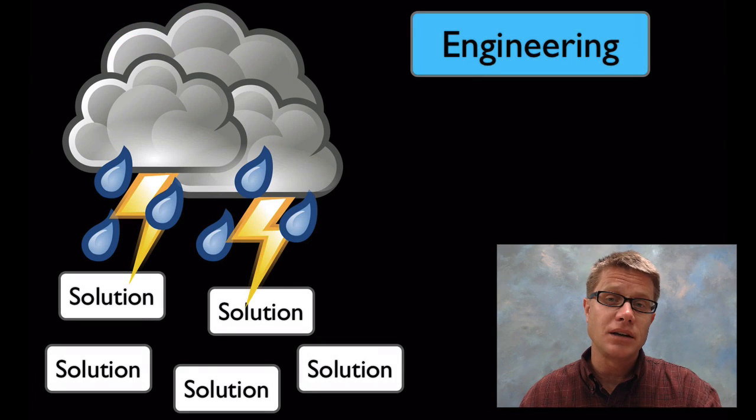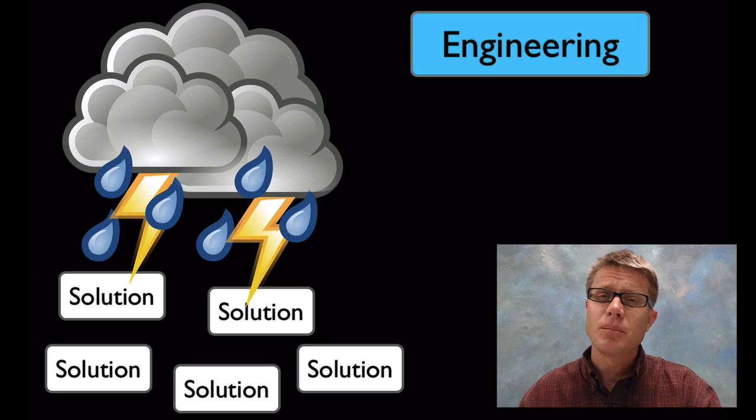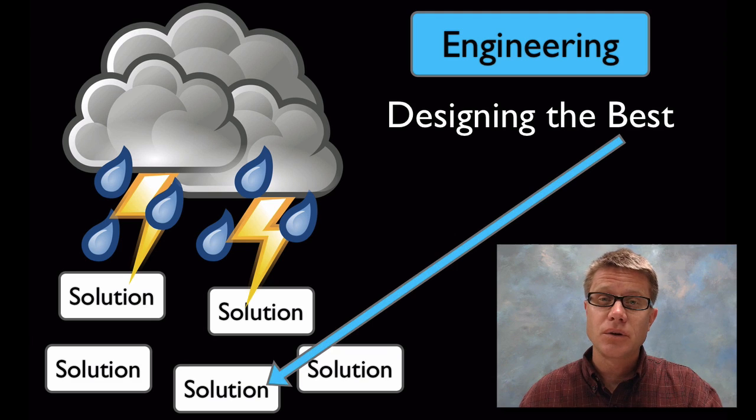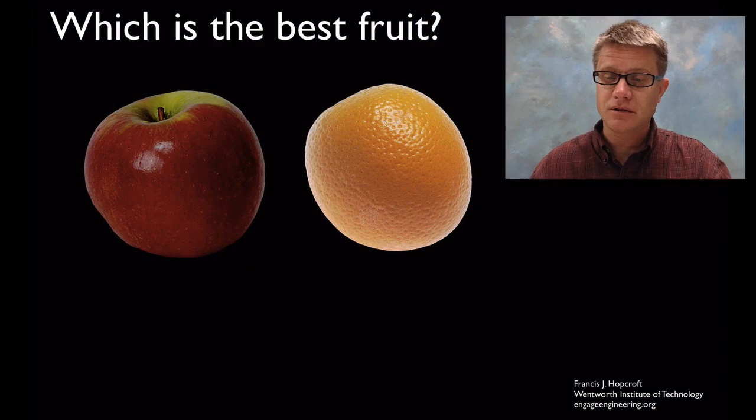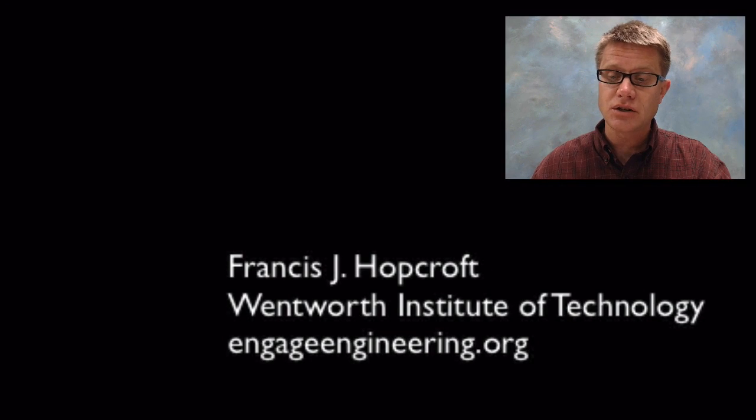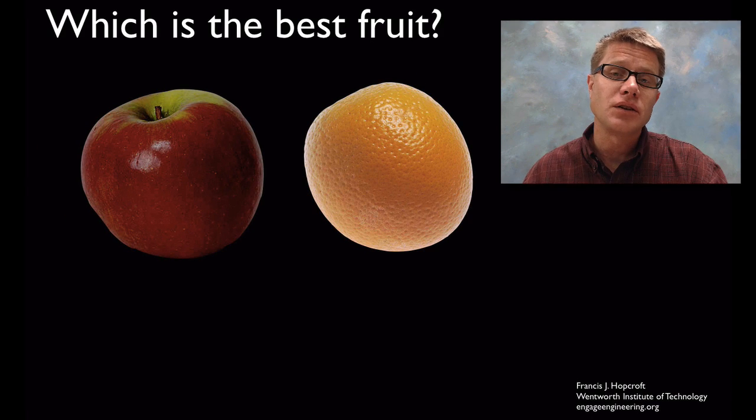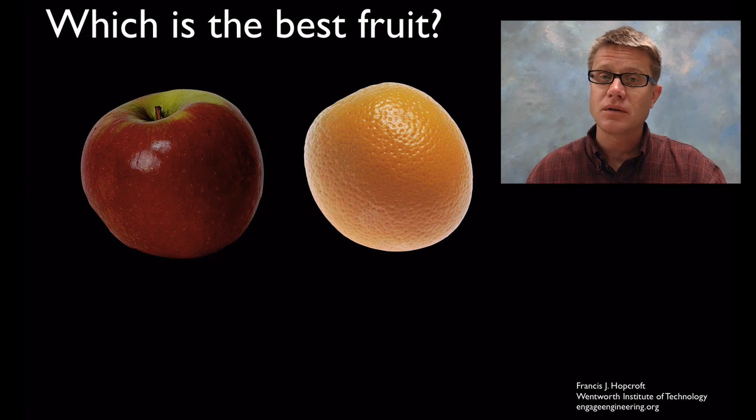In engineering, the idea is to brainstorm and come up with as many solutions as you can, but then you need to come up with the one best solution. When you're designing a best solution, how do you come up with that? Let me give you an example from engageengineering.org. Let's say we were to ask you which is the best fruit?